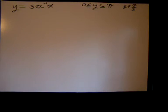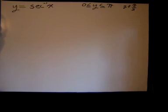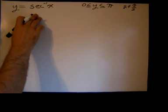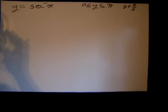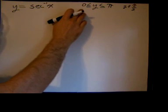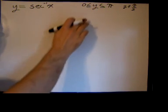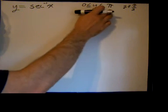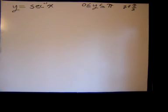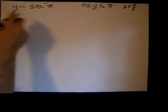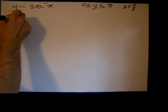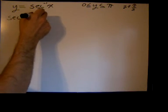Good morning. Today we're going to derive the formula for the derivative of the arc secant function — arc secant of x. If we say y equals the arc secant of x, or the inverse secant of x, then y lies in the range of the arc secant function, which is between 0 and π, but y cannot equal π/2. Therefore, we can say secant of y equals x.